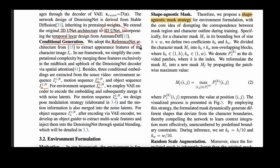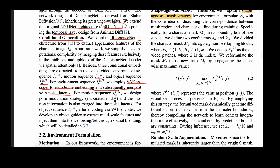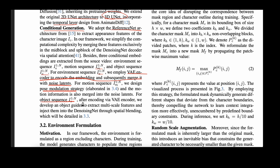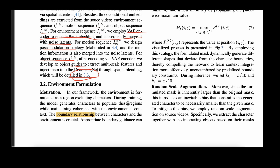They adapt the reference net architecture. For the environment sequence, they use a variational autoencoder encoder to encode the embeddings and subsequently merge them with the noise latents. For motion, they propose the post-modulation strategy, covered in section 3.4. For the object sequence, they use an object guider, covered in section 3.3. Now let's look into the environmental formulation.